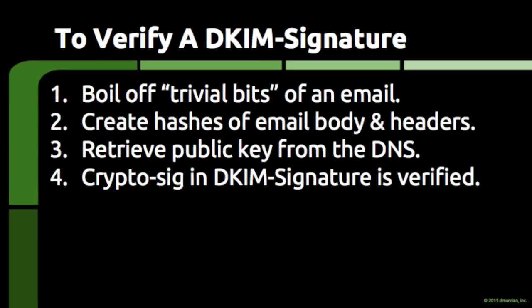When someone or something receives a piece of email containing a DKIM signature header, the email can be processed in a similar fashion to check the validity of the signature. Step 1: The trivial parts of the email are boiled off according to the options described in the DKIM signature — identical to what the creator of the signature did. Trivial changes to a piece of email can and do happen as email travels through servers of various makes and models, so we strip them out. Step 2: The email is jammed through the same math function to yield a hash for the body and a hash for the headers.